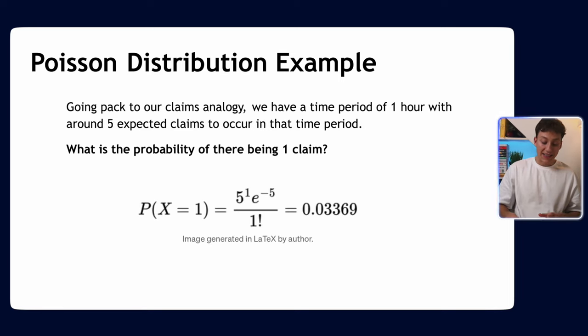In this case, five is our lambda—the average claims we expect to get in an hour. We work out the probability of receiving only one claim. We sub in the numbers: five is our lambda, one is our x. We sub this all into the Poisson PMF formula, and we get roughly 3.3% or 3.4% if you round up. So it's very, very small.